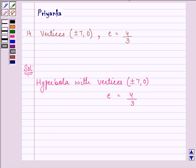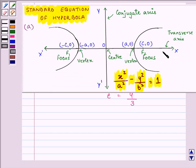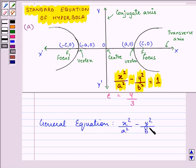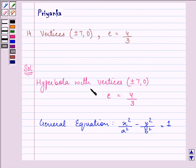As we know that the vertices lie on the x-axis, thus we have the hyperbola's general equation as x square by a square minus y square by b square is equal to 1. Now the vertices is also equal to plus minus a comma 0.